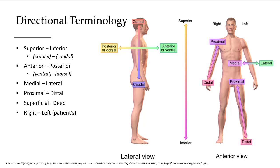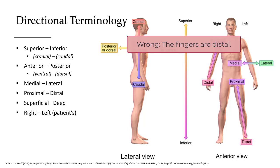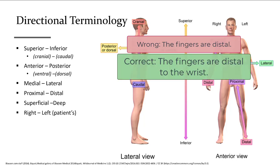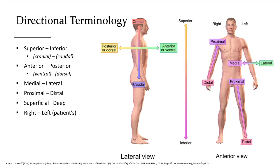The directional terminology, it's really important to know, is not a single word—it's always in reference to another thing. So it would be wrong to say the fingers are distal. It would be correct to say the fingers are distal to the wrist. You could say the elbow is proximal to the wrist. These terms are always one body part in reference to another body part. The chin is inferior to the mouth.